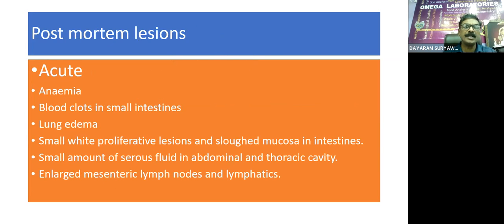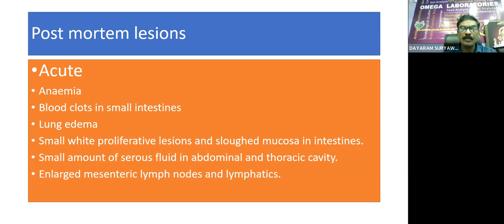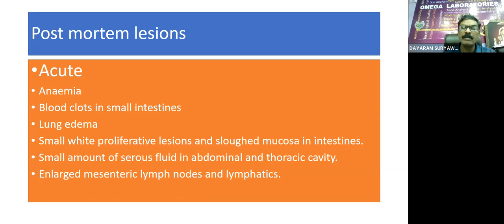Postmortem lesions — acute type: characterized by anemia, blood clots in small intestines, sometimes lung edema, small white proliferative lesions and sloughed mucosa in the intestines, small amount of serous fluid in abdominal and thoracic cavity, and enlarged mesenteric lymph nodes and lymphatics.